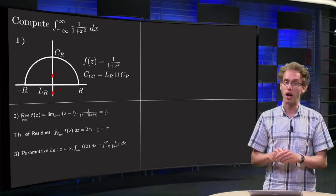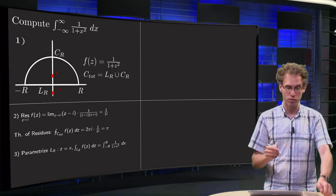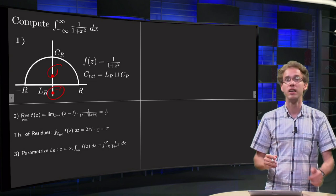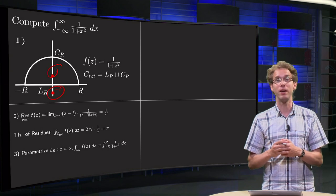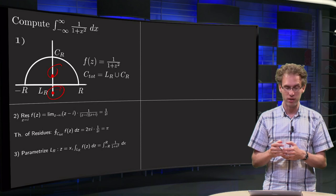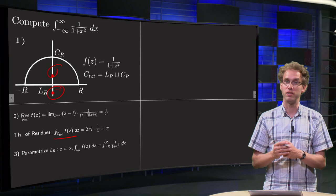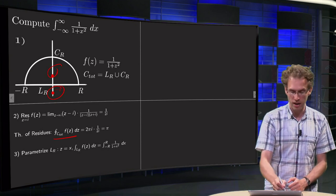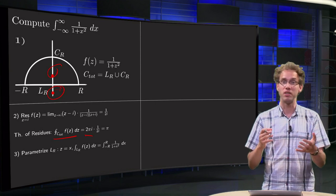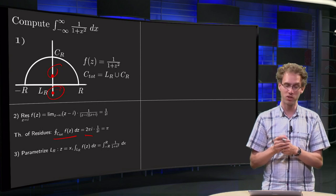Then we are going to apply the theorem of residues. We see that 1 over 1 plus z squared has two poles of order 1, one at i and one at minus i. We see that only the pole at z equals i is within the contour, so we apply the theorem of residues. The integral C_total f(z) dz equals 2πi times the residue at z equals i, because f(z) is analytic on and inside the contour except for the pole of order 1 at z equals i.